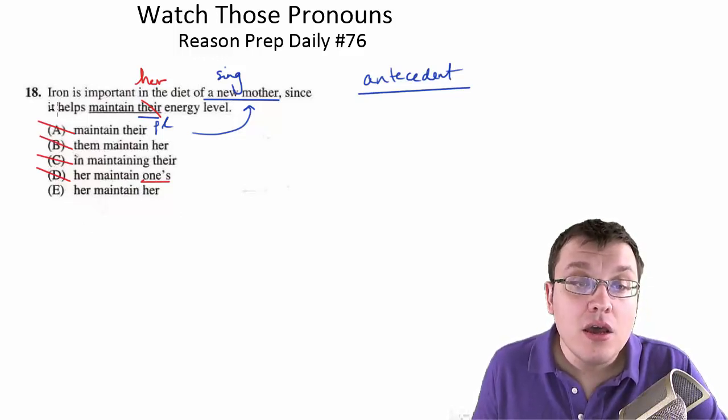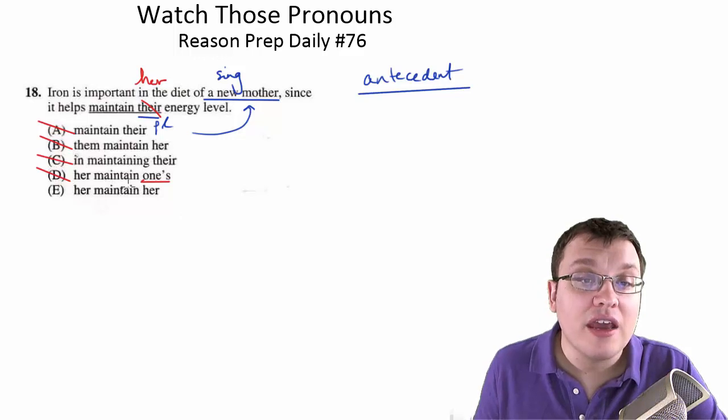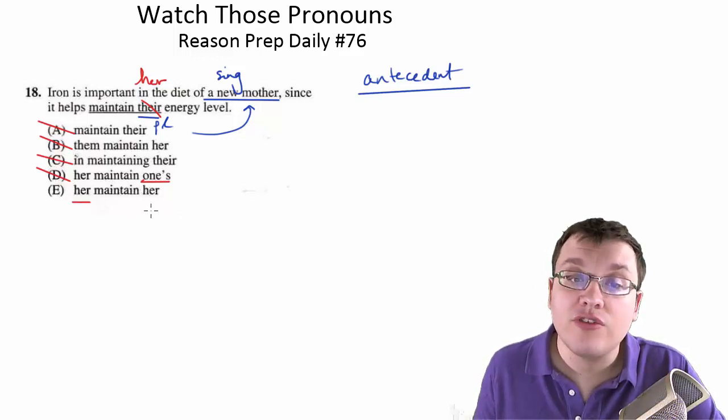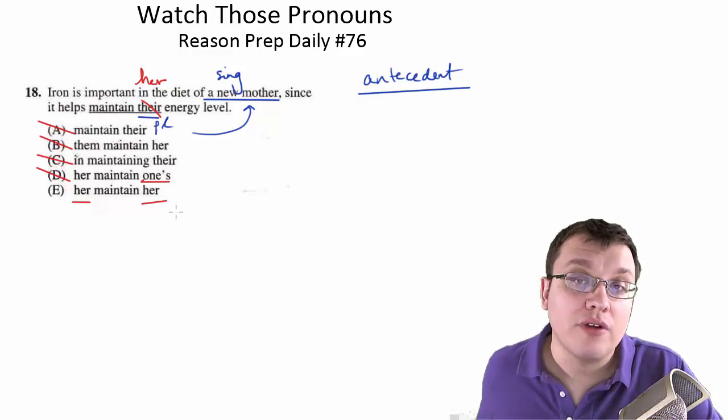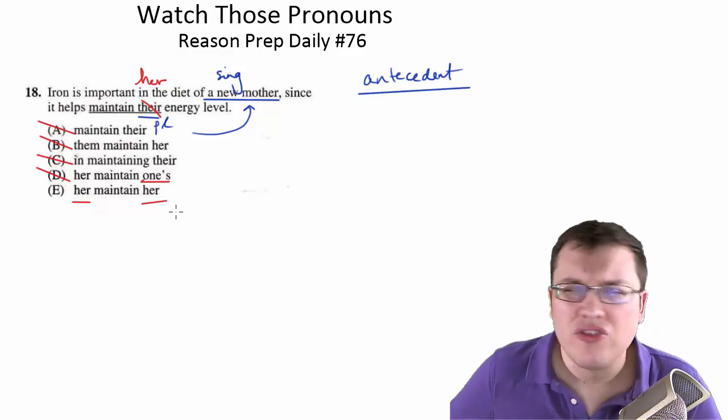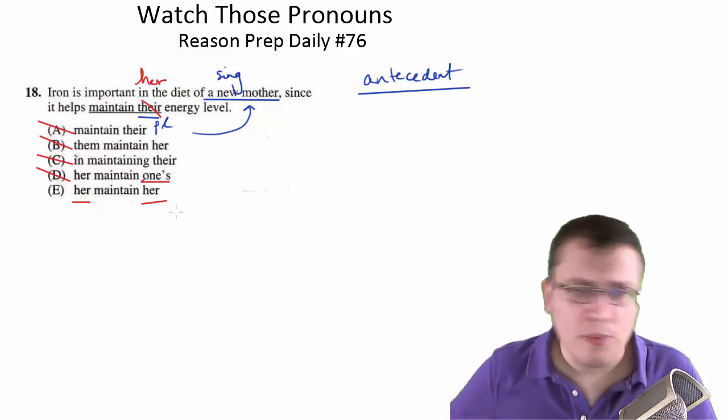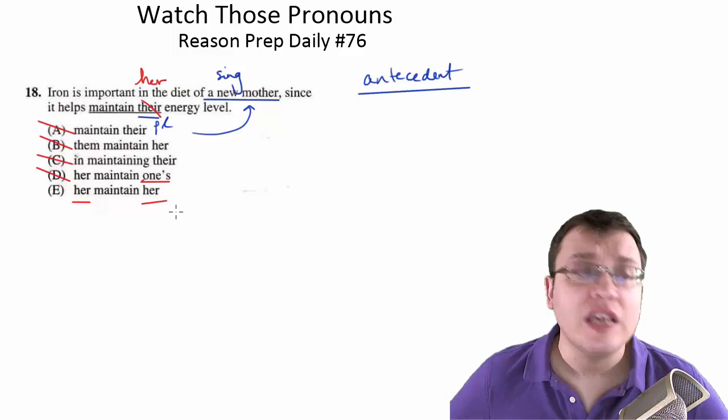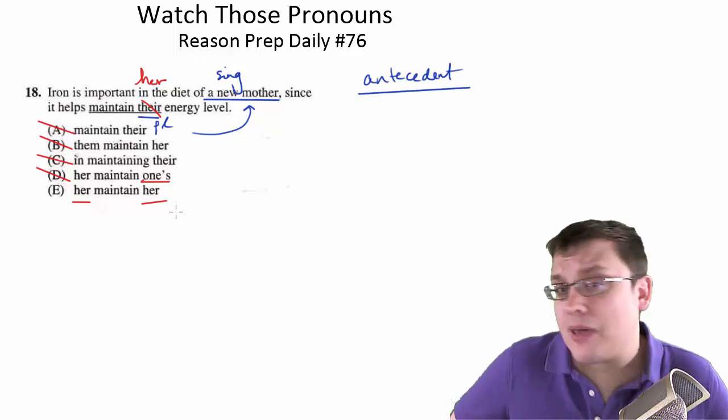So we're left with E: since it helps her maintain her energy level. That's fine. Her refers to the mother, it's singular. Her also refers to the mother, it's singular. Now you might say, oh, it sounds weird, right? That repetition of the 'her' seems redundant. And maybe we could get away with just saying it helps maintain her energy level, perhaps.